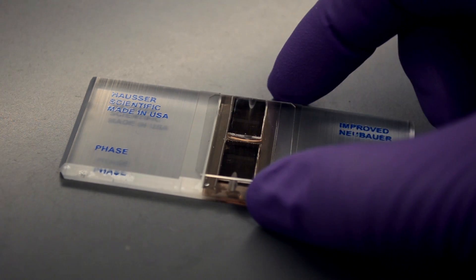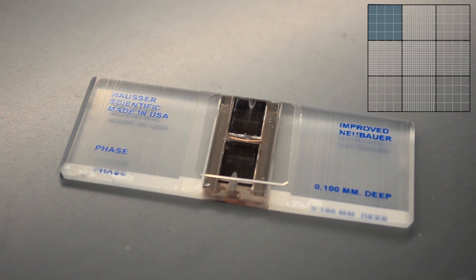When a glass coverslip is placed on top of this chamber, each of these nine squares contains 100 nanoliters of liquid.